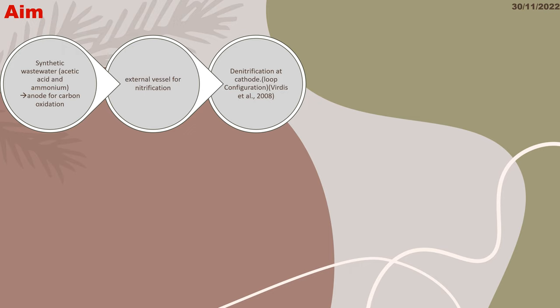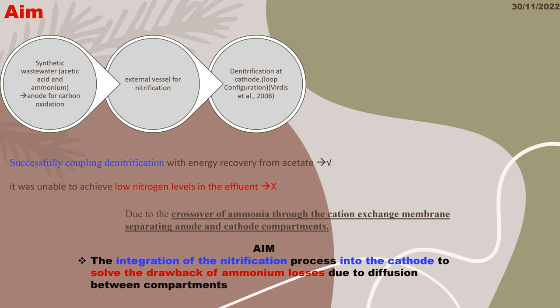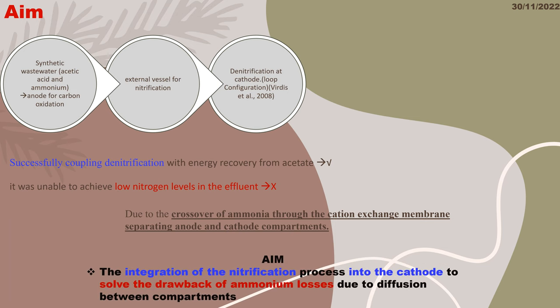According to their results, they recovered energy from acetate successfully, but the nitrogen removal amount was not enough because of crossover of ammonia through the cation exchange membrane separating anode and cathode compartments. So their aim is the integration of the nitrification process into the cathode to overcome ammonium losses problem.